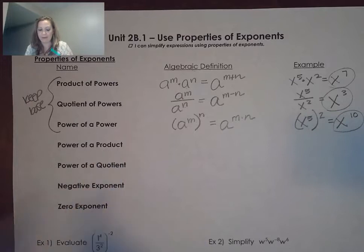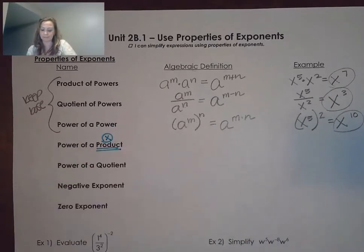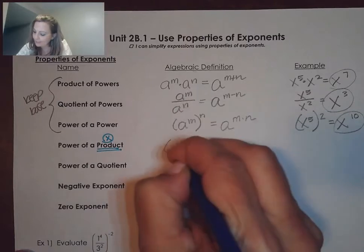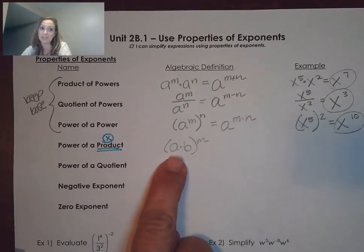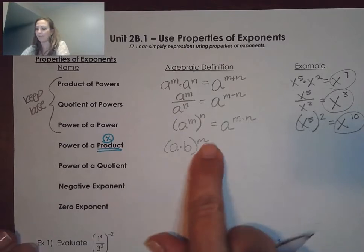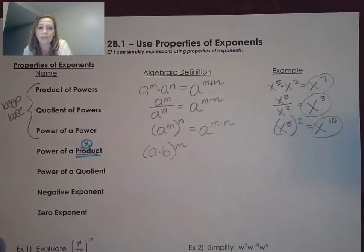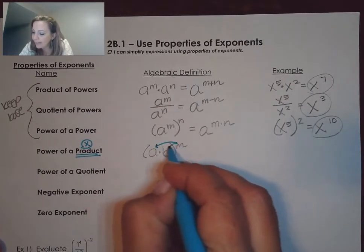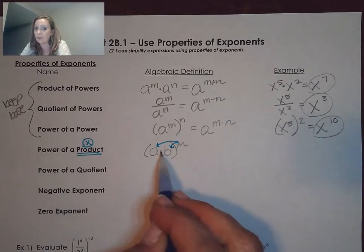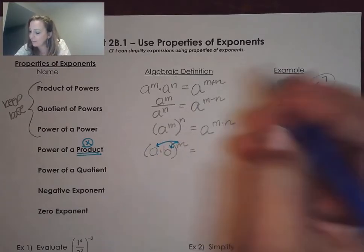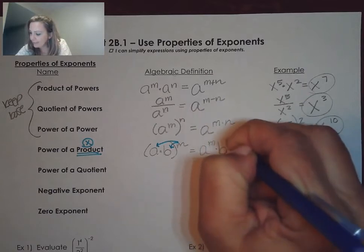The next is when we have the power of a product. It's important to remember that a product is when we have multiplication. If we had A times B to the nth power — notice this is not addition, not subtraction, this is multiplication — when it is a product, you are allowed to apply the exponent to each factor on the inside. So we have A to the nth times B to the nth power.